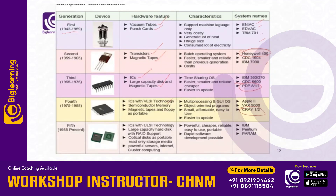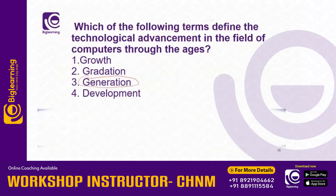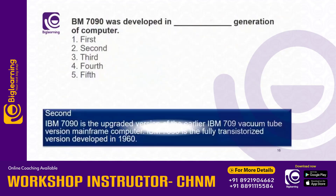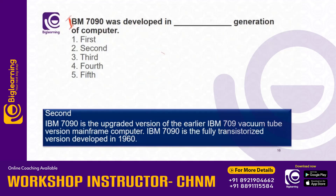There are already generation cases. We are looking at IBM. IBM 7090 — the mainframe computer. This is the second generation.